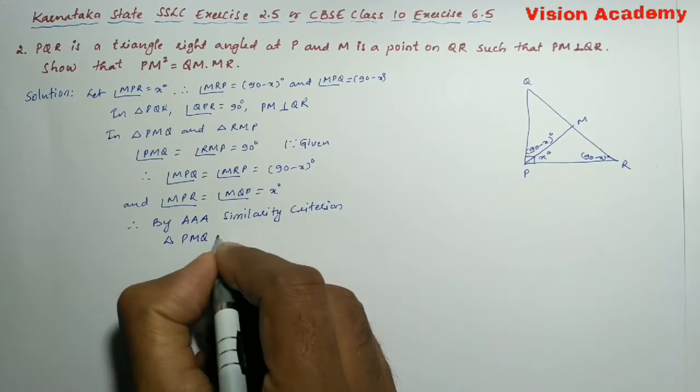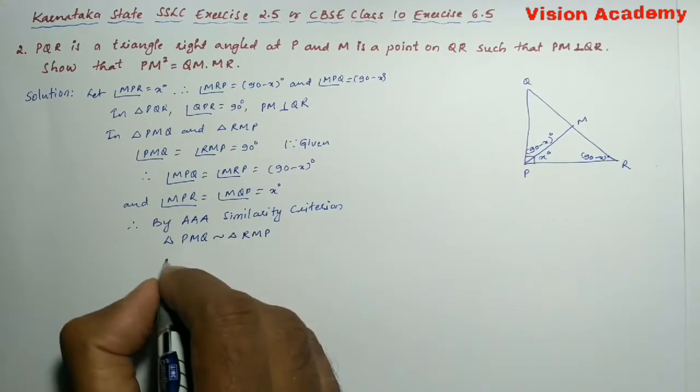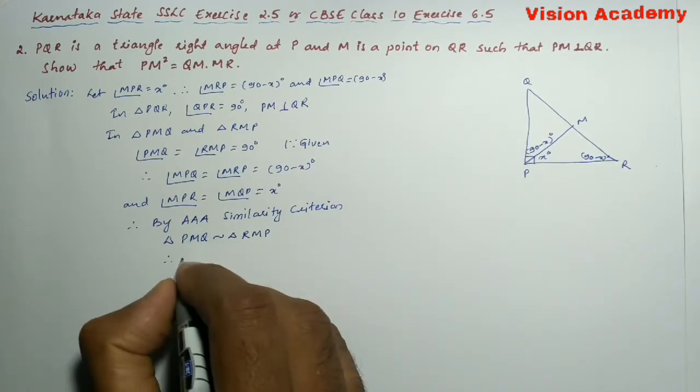By angle-angle similarity criterion, triangle PMQ is similar to triangle RMP. Once the triangles are similar, then their sides are proportional.